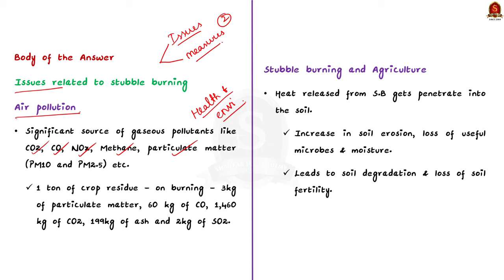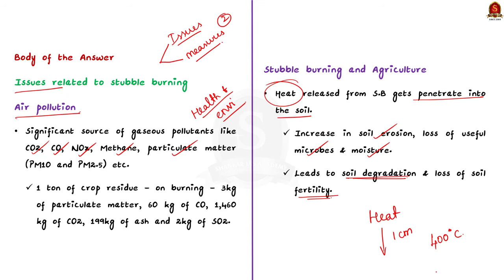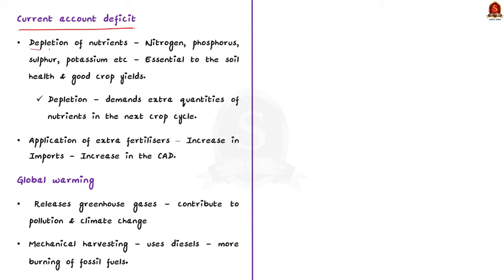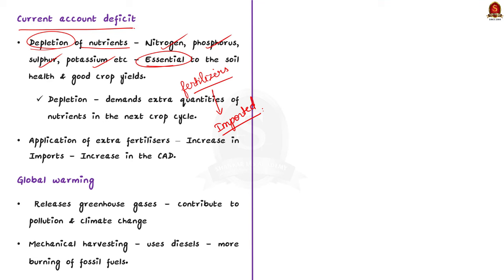The second issue is loss of soil fertility. The heat released from stubble burning penetrates into the soil, causing increase in soil erosion, loss of useful microbes in soil, and loss of soil moisture, leading to soil degradation and loss of soil fertility. For example, the heat from stubble burning penetrates 1 cm into soil, increasing the temperature to around 400 degrees Celsius. Next, stubble burning leads to depletion of various nutrients in soil like nitrogen, phosphorus, sulfur, and potassium. The depletion of these nutrients demands more fertilizers in the next cropping cycle, which have to be imported, increasing our current account deficit. For example, India's fertilizer subsidy bill amounted to 2.25 lakh crores in 2022.